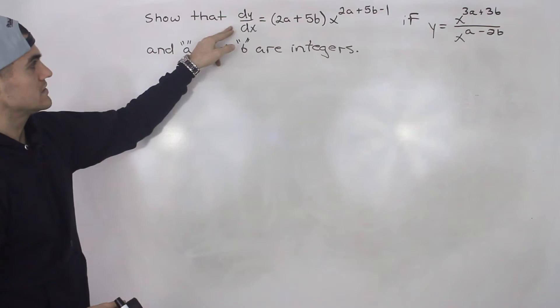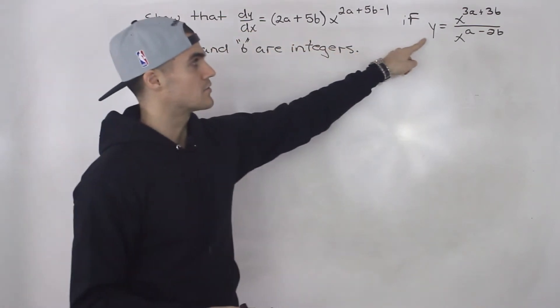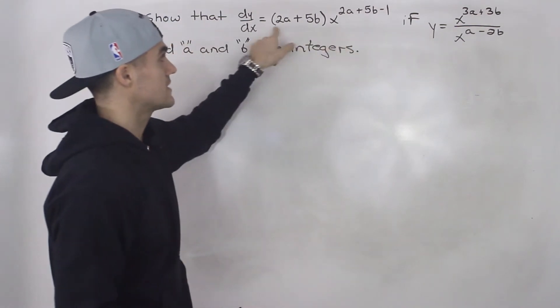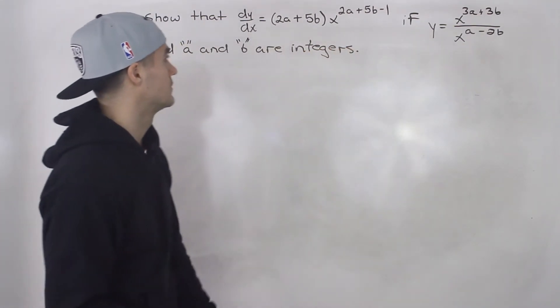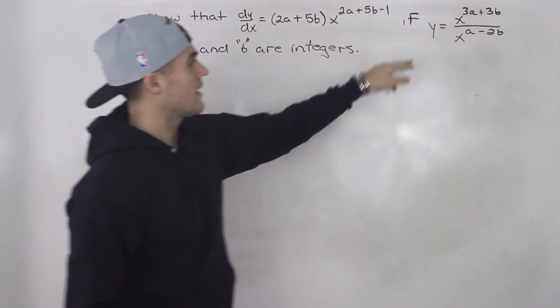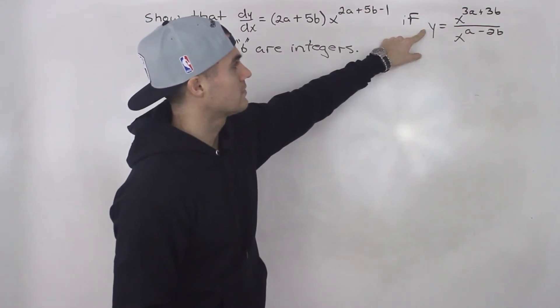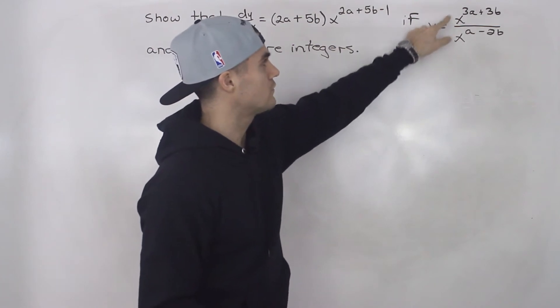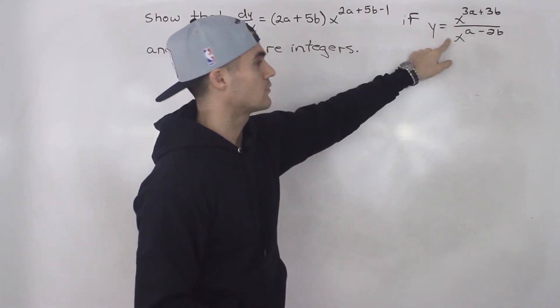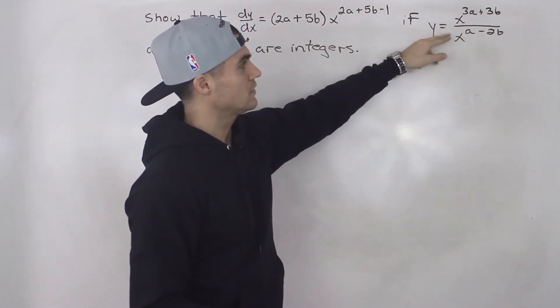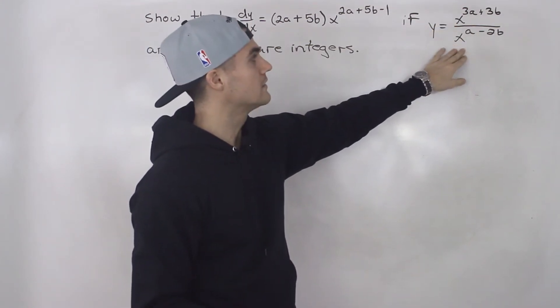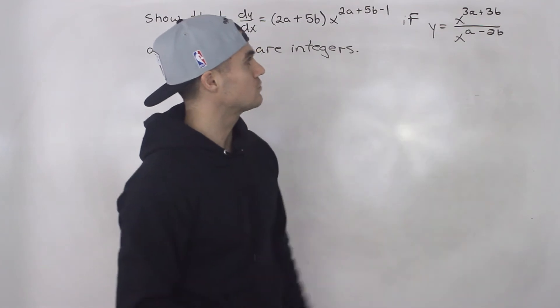This dy/dx is the derivative of the function y, and we have to show that this is the derivative of that function. Notice that y here is two functions in rational form. Looking at it, you may think you have to use the quotient rule, and you can. However, that's going to take you super long.